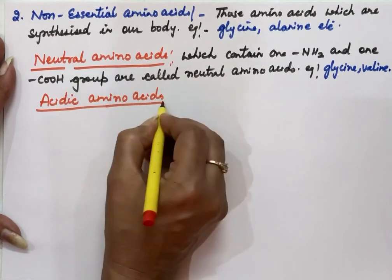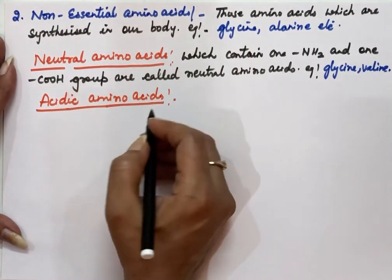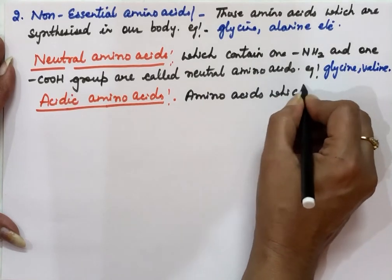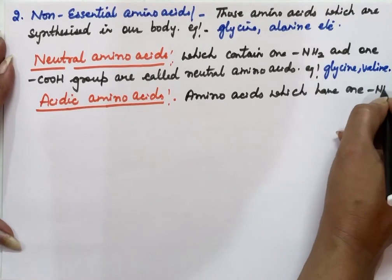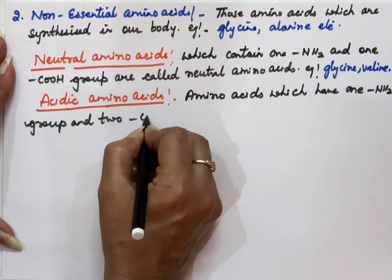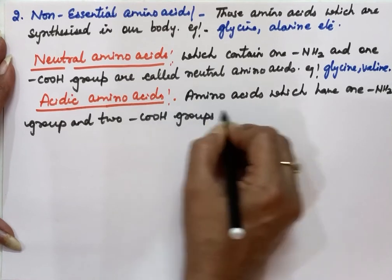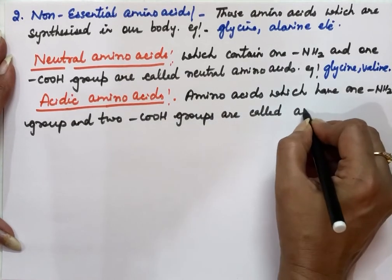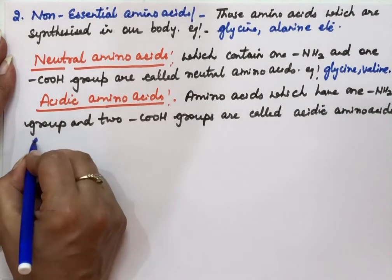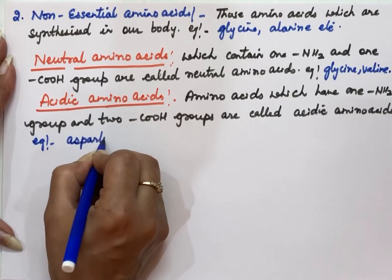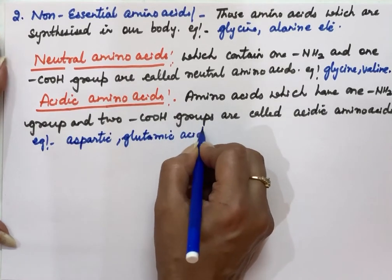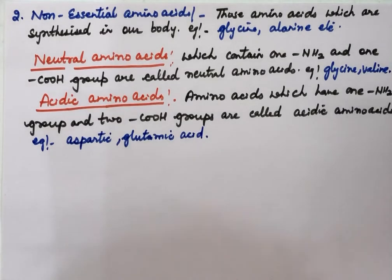Acidic amino acids are those which have one NH₂ group but two COOH groups, making them acidic in nature. Examples of acidic amino acids are aspartic acid and glutamic acid — even their names contain the word 'acid.'